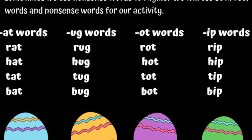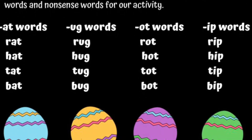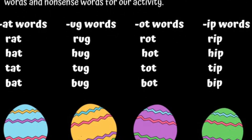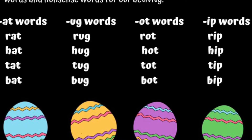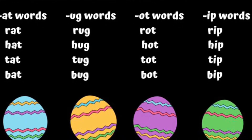Our -ot words are rot, hot, tot, and bot. And our -ip words are rip, hip, tip, and bip.